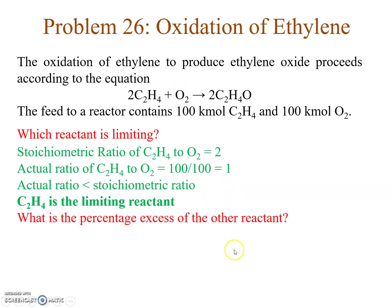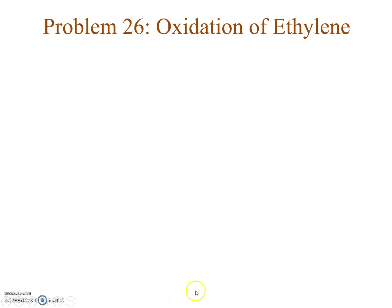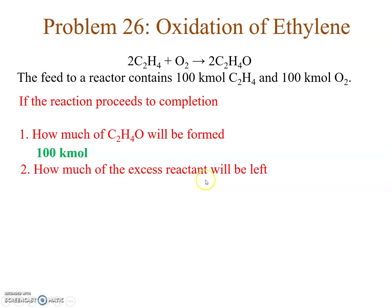The percentage excess of oxygen: the stoichiometric requirement of oxygen for 100 kilo moles of ethylene is 50 moles (since 2 moles ethylene require 1 mole oxygen). Actually fed is 100 kilo moles. Fractional excess = (100 − 50) / 50 = 1, so the percentage excess of oxygen is 100%. If the reaction proceeds to completion, 100 kilo moles of ethylene oxide will be formed, and the remaining 50 kilo moles of excess oxygen will be left.